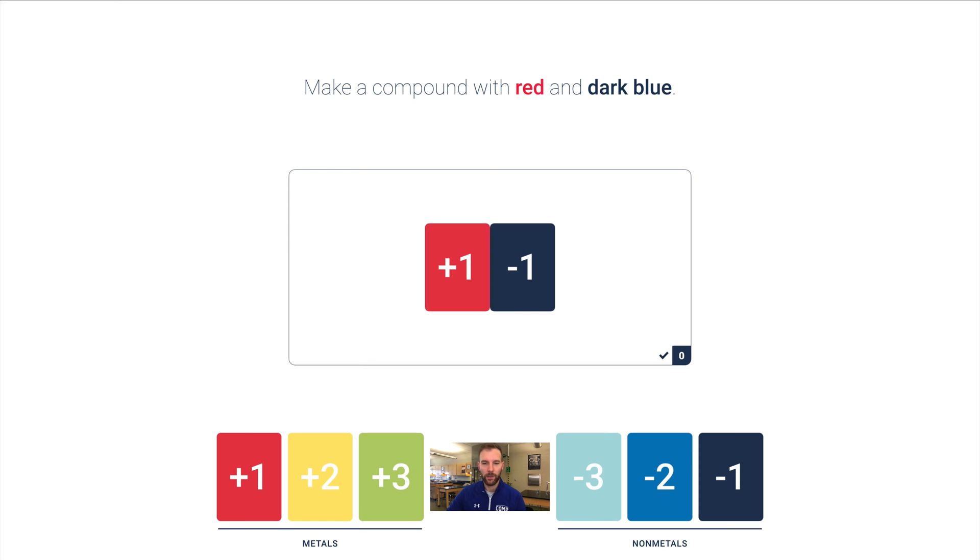Let's try another one: red and blue. This is a plus one and a minus two. If I just had one of each my overall charge is not zero, it's negative one. I have to add one more red and now two reds will cancel out that one negative two.